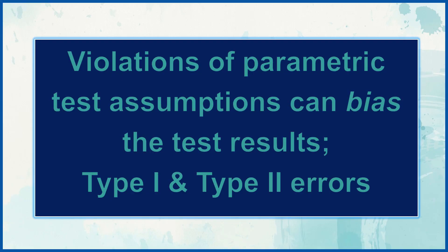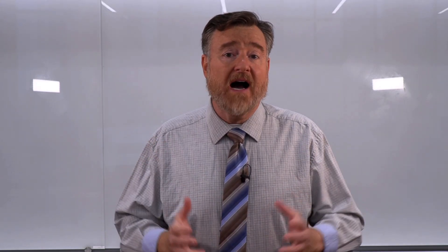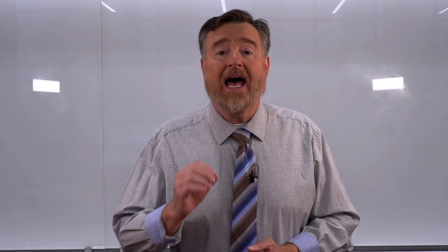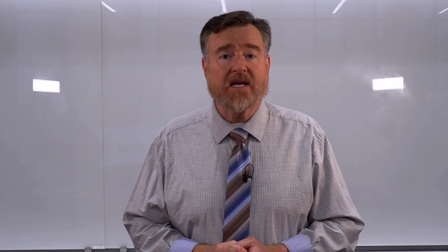We can make errors. Specifically, violations of test assumptions can bias the test results. We can make Type 1 errors where we find statistical significance where it doesn't exist — we say that something is true when it's not. Or we can make Type 2 errors in which we miss an effect that is truly there. Therefore, it is vital that we understand the assumptions of the test that we're going to use and make sure that our data meet those assumptions.